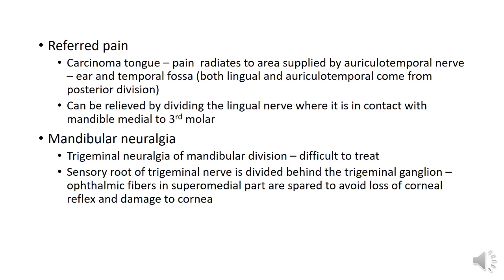Trigeminal neuralgia is a condition characterized by pain of unknown origin in areas supplied by the trigeminal nerve. When the mandibular division is involved, it is often very difficult to treat. The permanent cure is division of the sensory root of the trigeminal nerve, done at the trigeminal ganglion. The ophthalmic fibers in the superomedial part are spared to avoid loss of the corneal reflex and damage to the cornea.